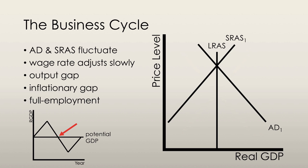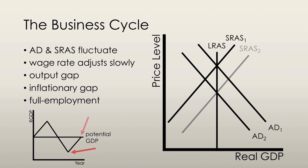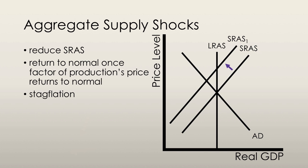But let's say aggregate demand decreases — for example, exports decrease and imports increase. Then we have a reduction in aggregate demand, and as we can see on the graph, we're actually in a trough in the business cycle, because real GDP is less than potential GDP. What happens is that the money wage rate adjusts and we restore full employment equilibrium.